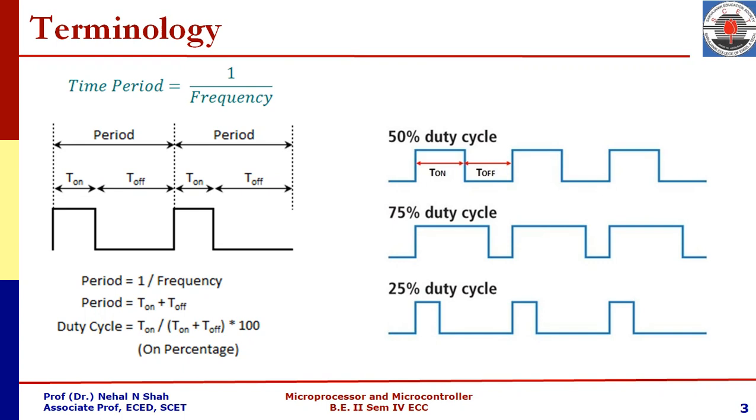The meaning of 50% duty cycle is on time and off time both are equal. In case of 75% duty cycle, for three-fourths of the cycle pulse will be at logic high and for one-fourth cycle pulse will be at logic low. 25% duty cycle means on time is just one-fourth and off time is three-fourths. Based on on time and off time we can identify what is duty cycle, and if duty cycle is given in percentage we can identify what will be the actual waveform.